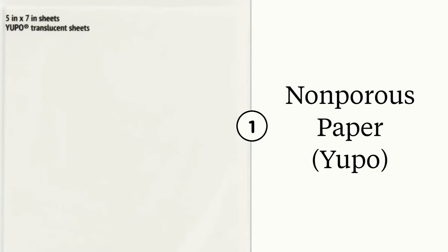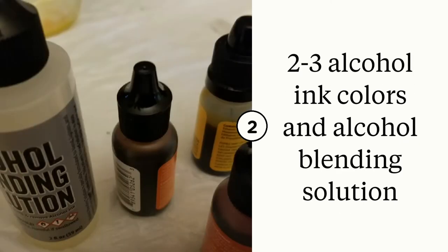You will need a non-porous paper such as Yupo paper. To start, you need two or three colors of alcohol ink and a clear alcohol blending solution.